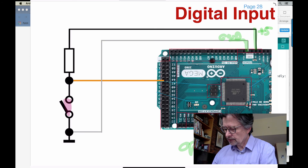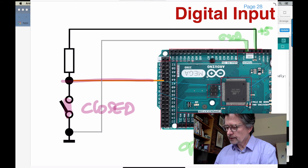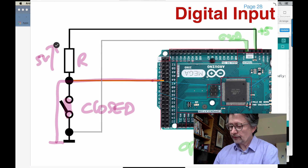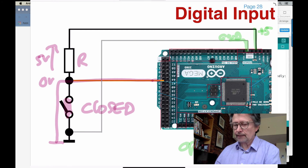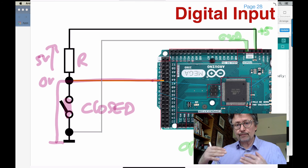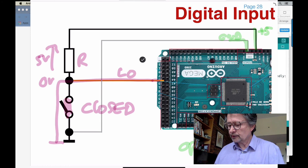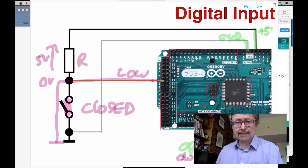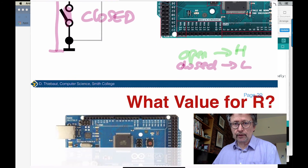If I close the switch, the pin is connected directly to ground. There's a direct path from that pin to ground. The resistor allows a difference in potential — 5 volts across it — so the pin is really at zero volts. The resistor acts as a buffer between plus 5 and ground, so the pin registers a LOW. Closed switch means LOW. That's how we wire a switch to generate a digital low.